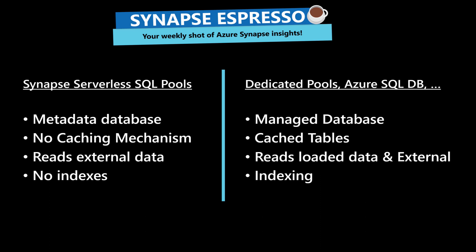Synapse Serverless SQL pools is basically a metadata database — a database that does not really have any managed tables. While Dedicated SQL pools and Azure SQL DB are managed databases because they have their own files and their own table structures where you load data into. This also has the implication that Synapse Serverless does not have a real caching mechanism, which means each query you execute is not going to hit a cache table, and frequently accessed datasets will not be served very fast because they cannot be fetched out of memory like you would with a Dedicated SQL pool or an Azure SQL DB.